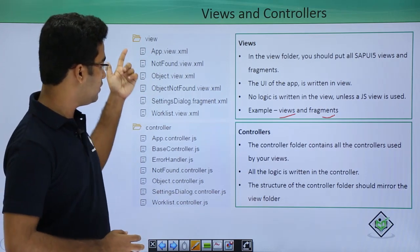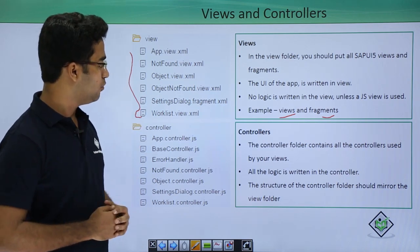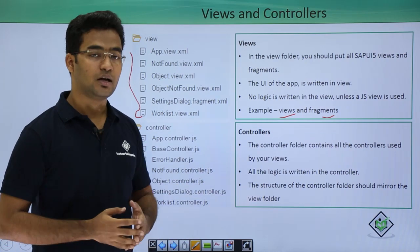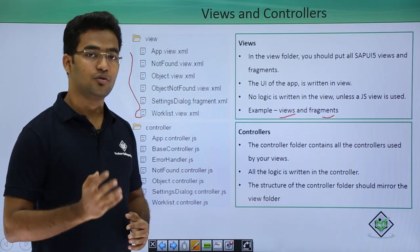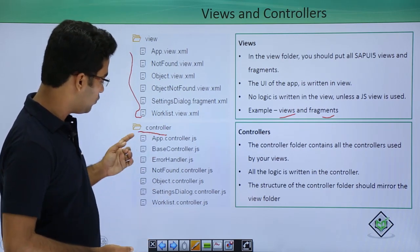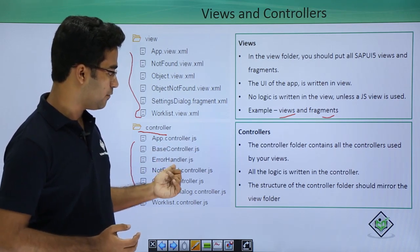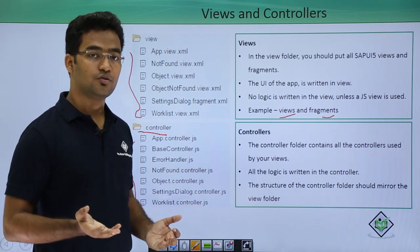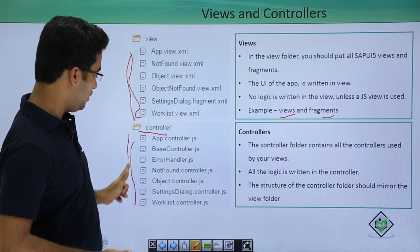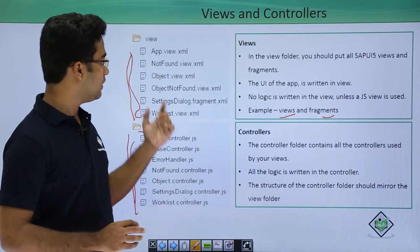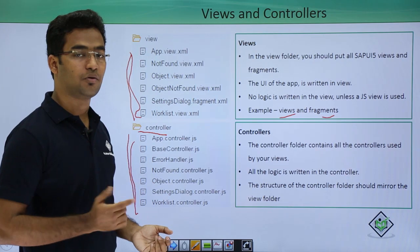Here are examples of views kept in the view folder. Controllers are generally the logic of the application — all logic is kept in the controller folder. The structure of the controller folder should resemble the view folder, so there should be as many controllers as there are views. Fragments do not have their own controllers, but all views have their own respective controllers.